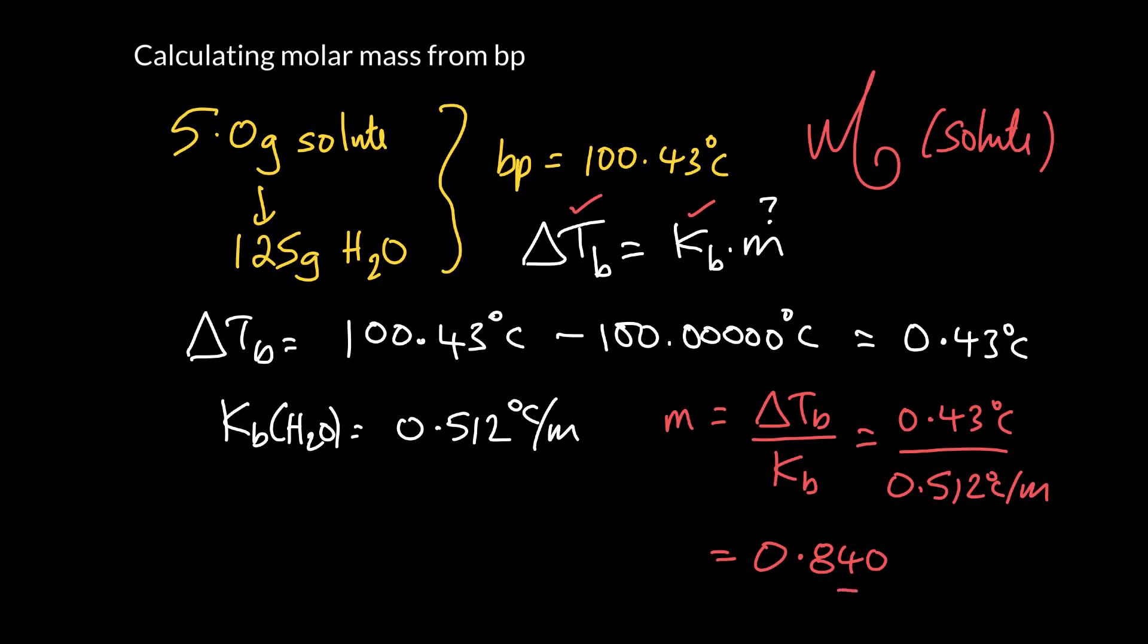In fact, that last zero is a guard digit. We're not really supposed to write it down. And the units there are degrees C over degrees C per molal. So at the end of the day we're just left with molal. Or if you remember, molal is moles of solute per kilograms of solvent. So we've got 0.84 moles of solute in every kilogram of solvent.